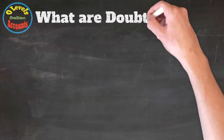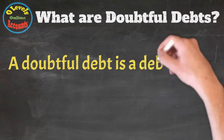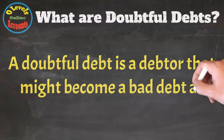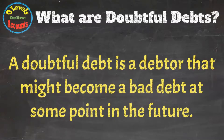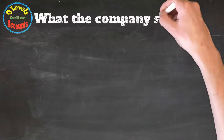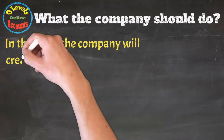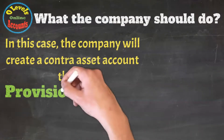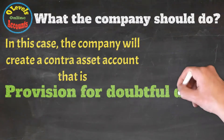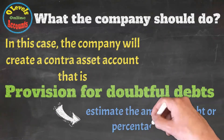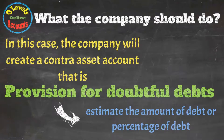What are doubtful debts? A doubtful debt is a debtor that might become a bad debt at some point in the future. In this situation, the company will create a contra asset account called provision for doubtful debts. It is the estimate of debt or percentage of debt that might be converted into bad debts.